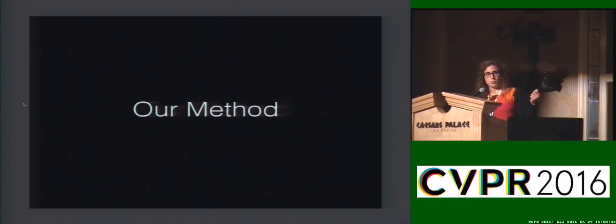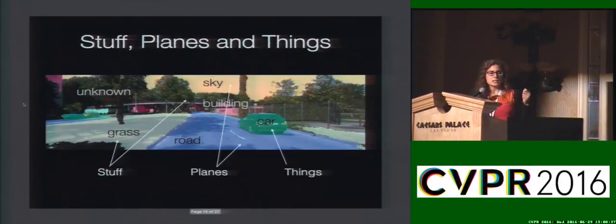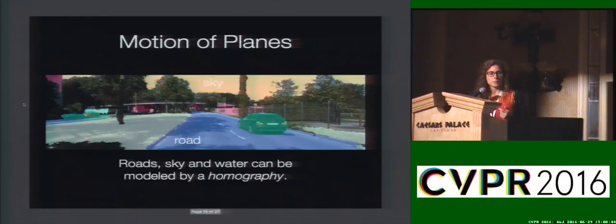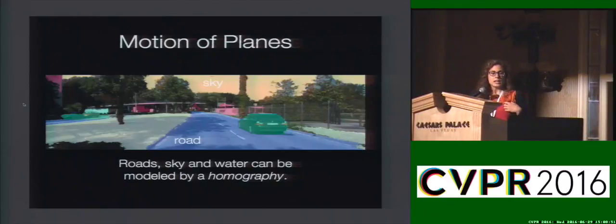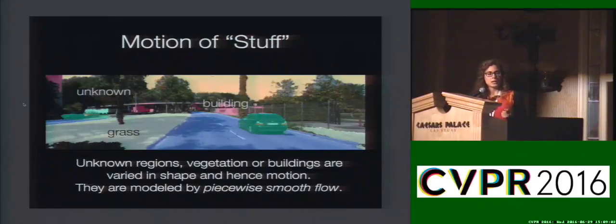So how does it work? We start from a semantic segmentation of the scene, and we divide it into three categories according to its motion: stuff, planes, and things. Planes are regions that are roughly planar, like roads, sky, and water, and we model this with a homography. Stuff are regions that are unknown or that have very complex shape, and therefore very complex motion — we model this with piecewise smooth flow.